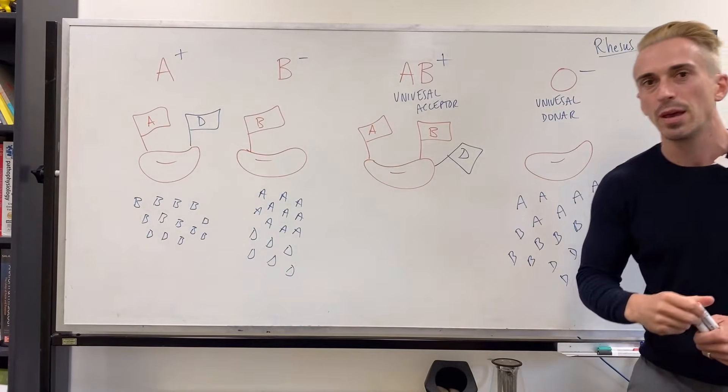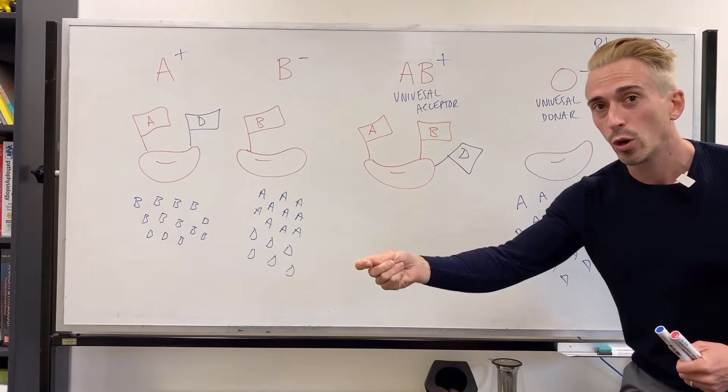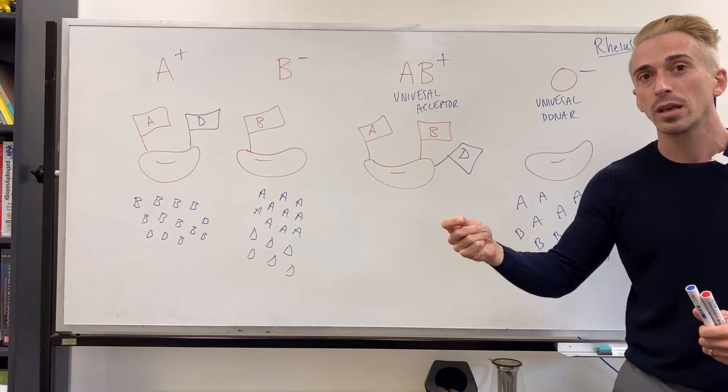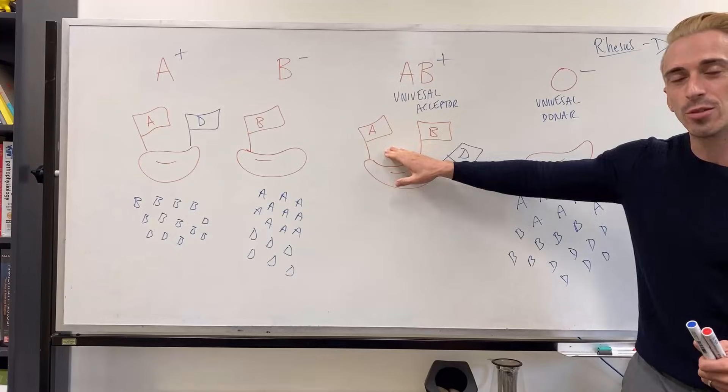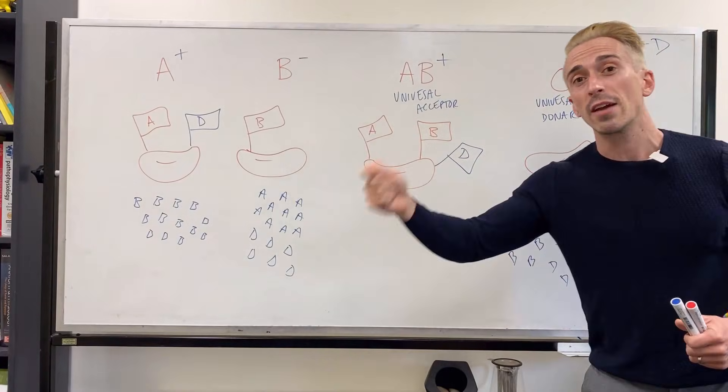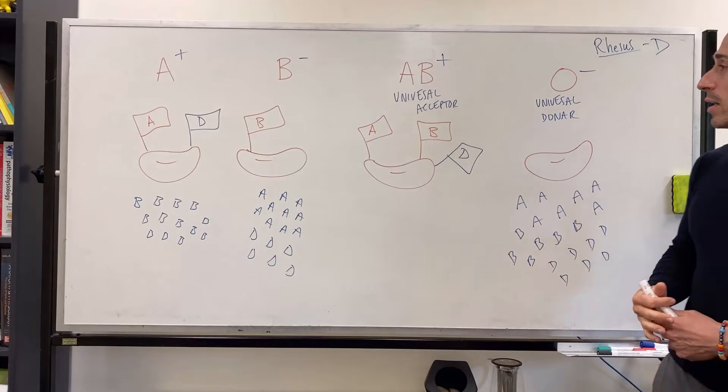And that's how you should look at it. If you ever get asked a question in an exam, this is the particular blood type, who can they donate to or who can they receive blood from? Remember, they will not create antibodies against their own flag or antigen, but they will create antibodies against everybody else's. And this is a quick run through of blood types and transfusions.